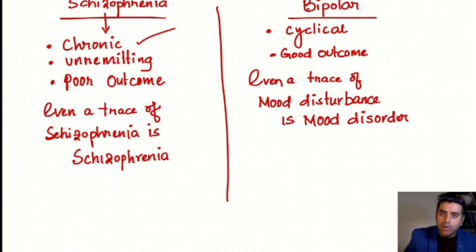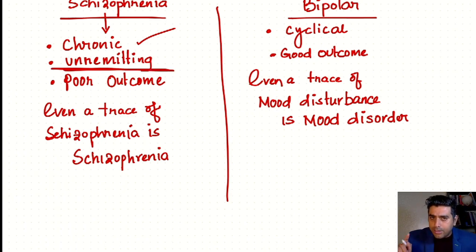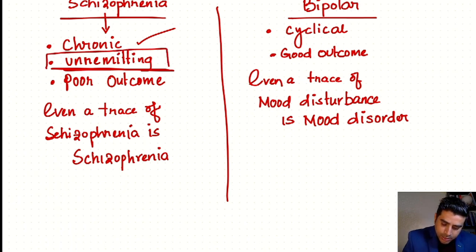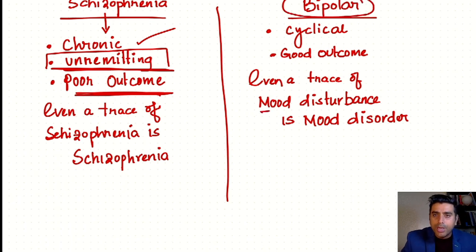Schizophrenia is chronic, and even Bipolar is also chronic. It is unremitting. As discussed in a previous video on remission, relapse, and recurrence — this disease is unremitting and the outcome is very poor. Schizophrenia's outcome is very poor compared to Bipolar Disorder.